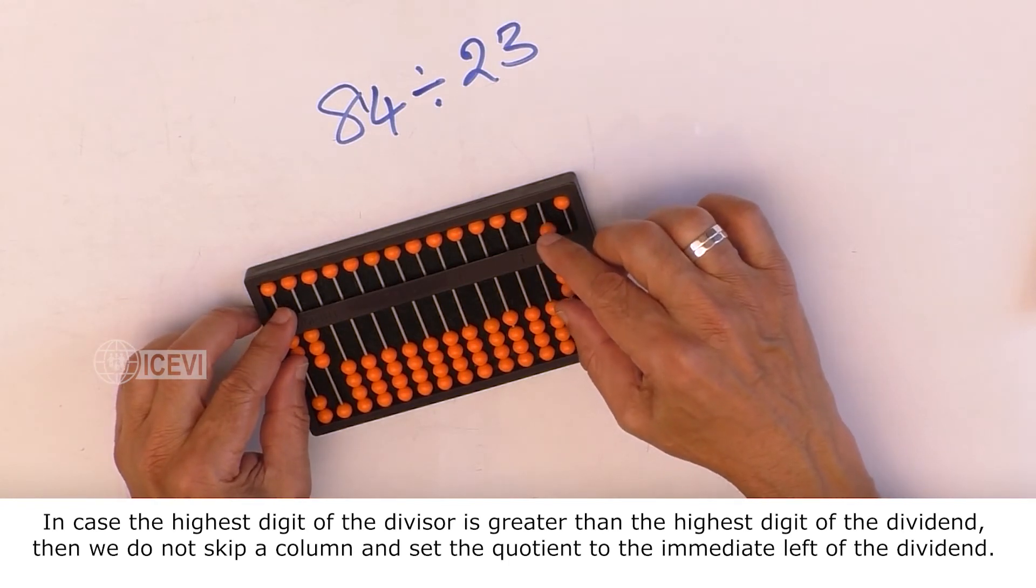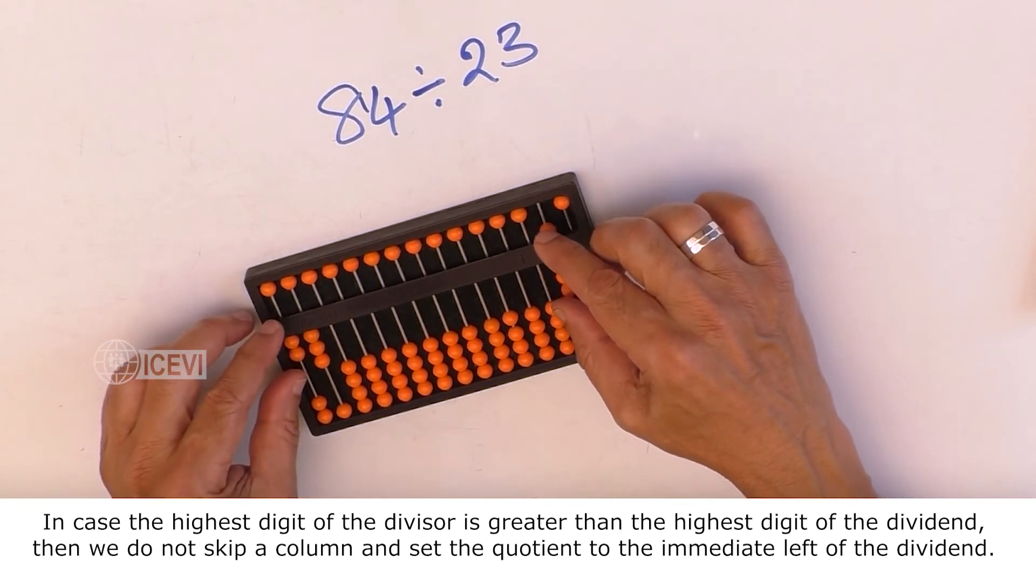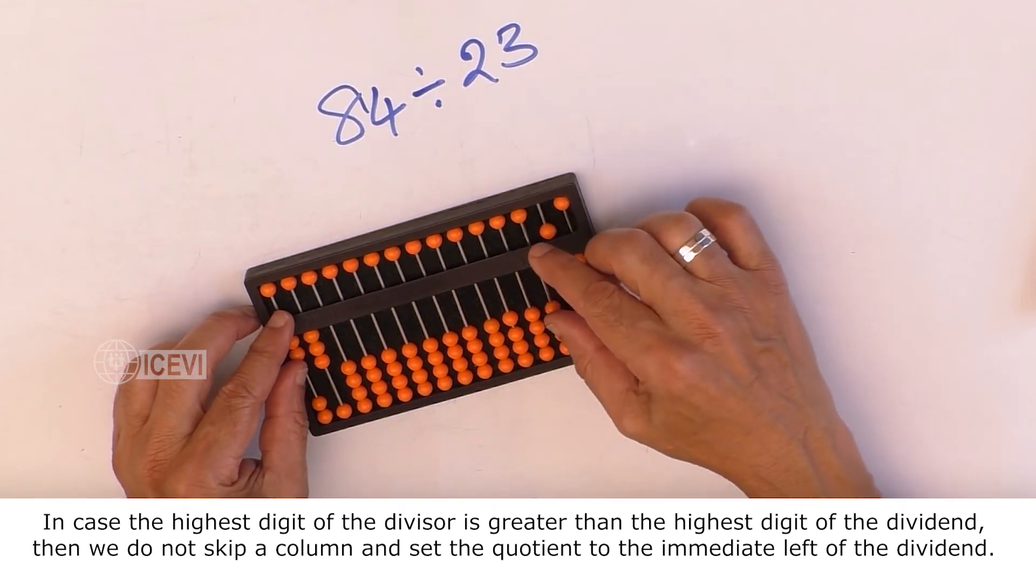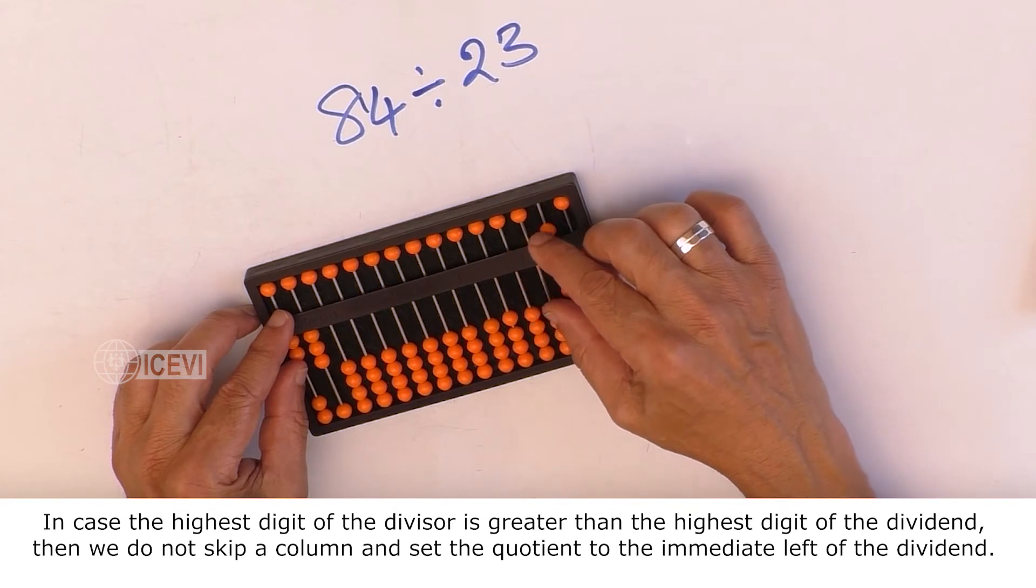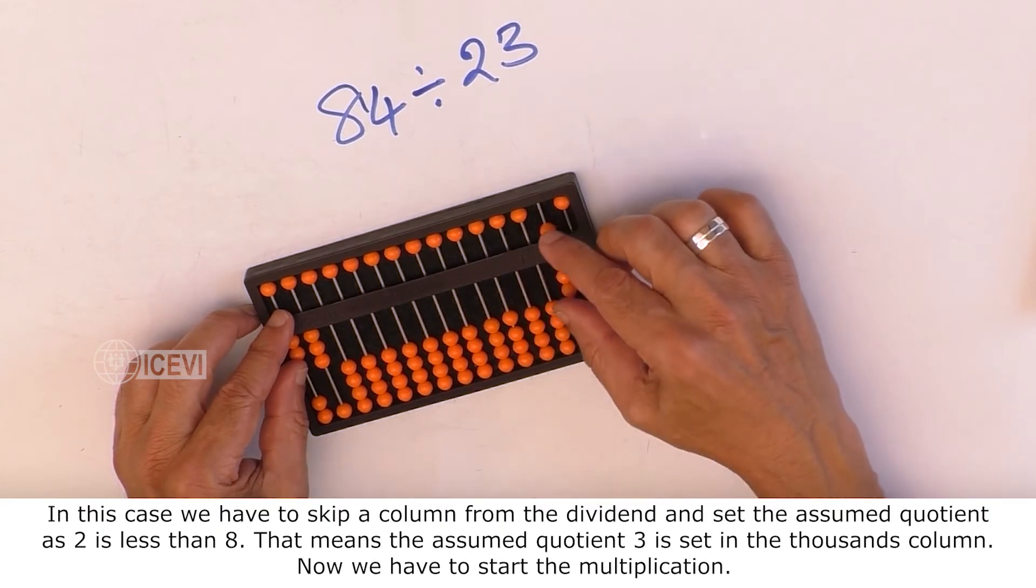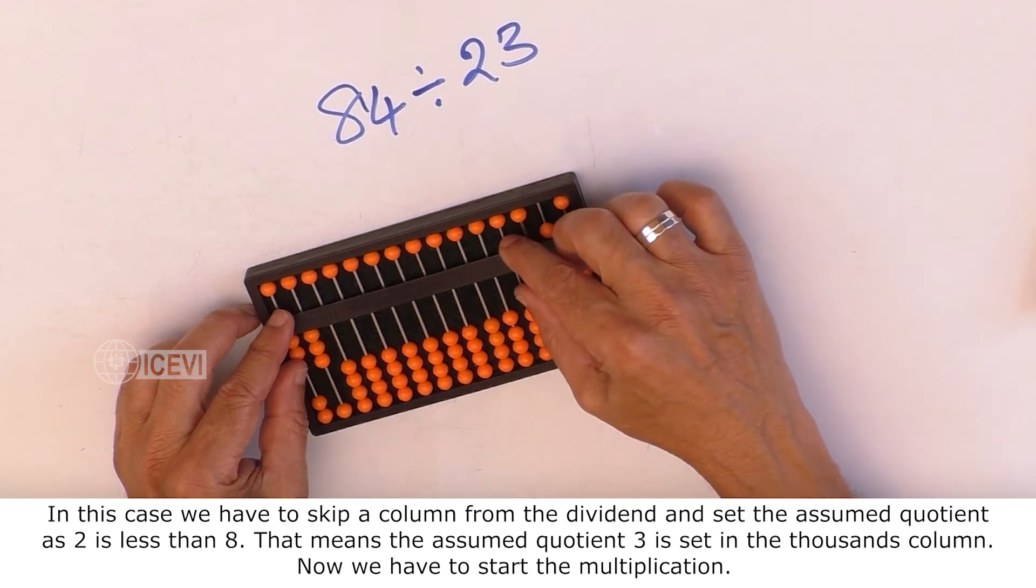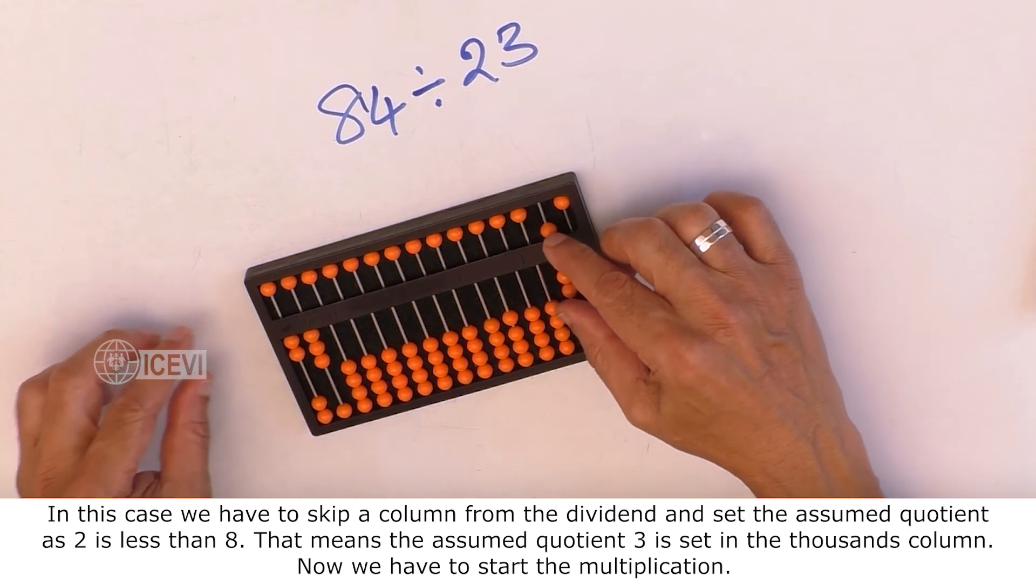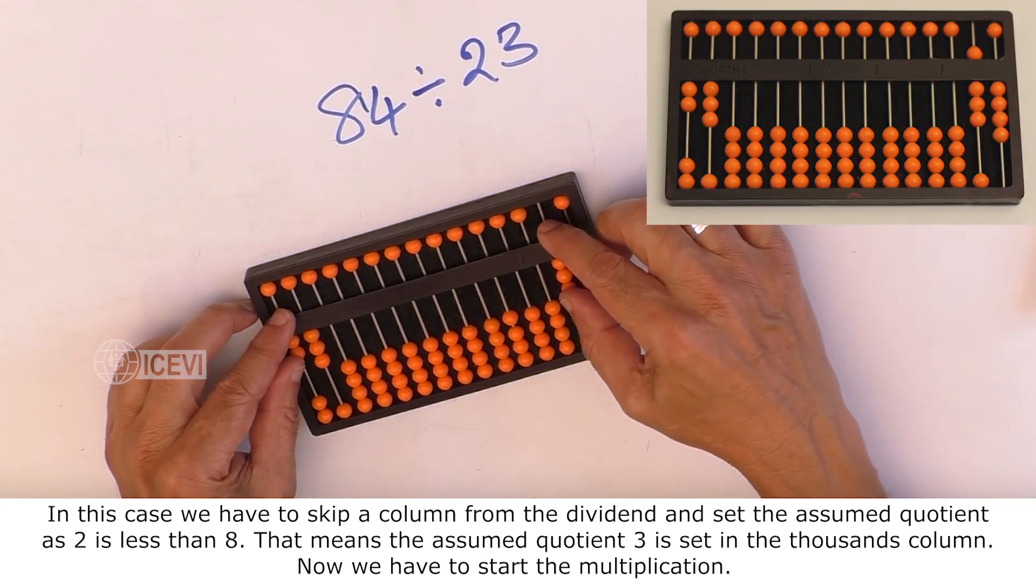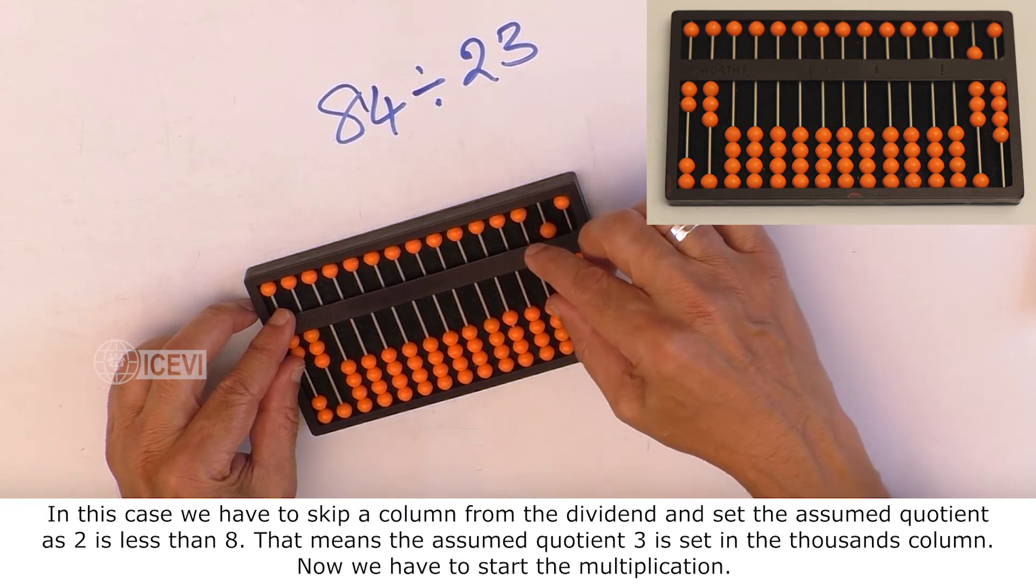In case the highest digit of the divisor is greater than the highest digit of the dividend, then we do not skip a column and set the quotient to the immediate left of the dividend. In this case, we have to skip a column from the dividend and set the assumed quotient as 2 is less than 8. That means the assumed quotient 3 is set in the thousands column.